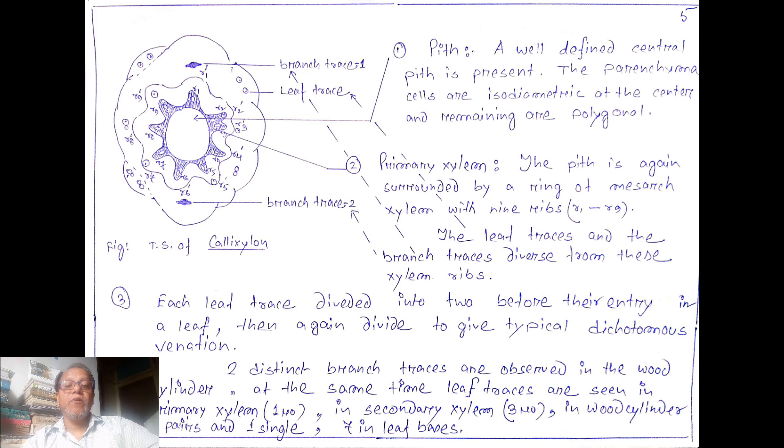The first point is pith. A well-defined central pith is present in the TS of Callixylon. It is parenchymatous in nature and the parenchyma are isodiametric at the center and peripheral parenchyma are polygonal. The pith is surrounded by primary xylem and this primary xylem ring is of mesarch type with nine ribs. Here the ribs are identified as R1, R2 up to R9. Leaf traces and branch traces diverge from these xylem rings, from these nine ribs.